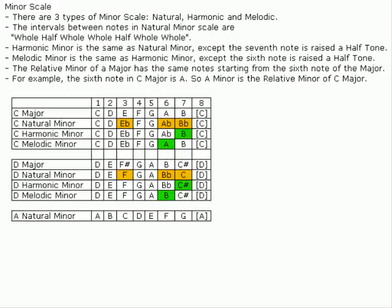Minor Scale. There are three types of minor scale: natural, harmonic, and melodic. The intervals between notes in natural minor scale are whole, half, whole, whole, half, whole, whole.